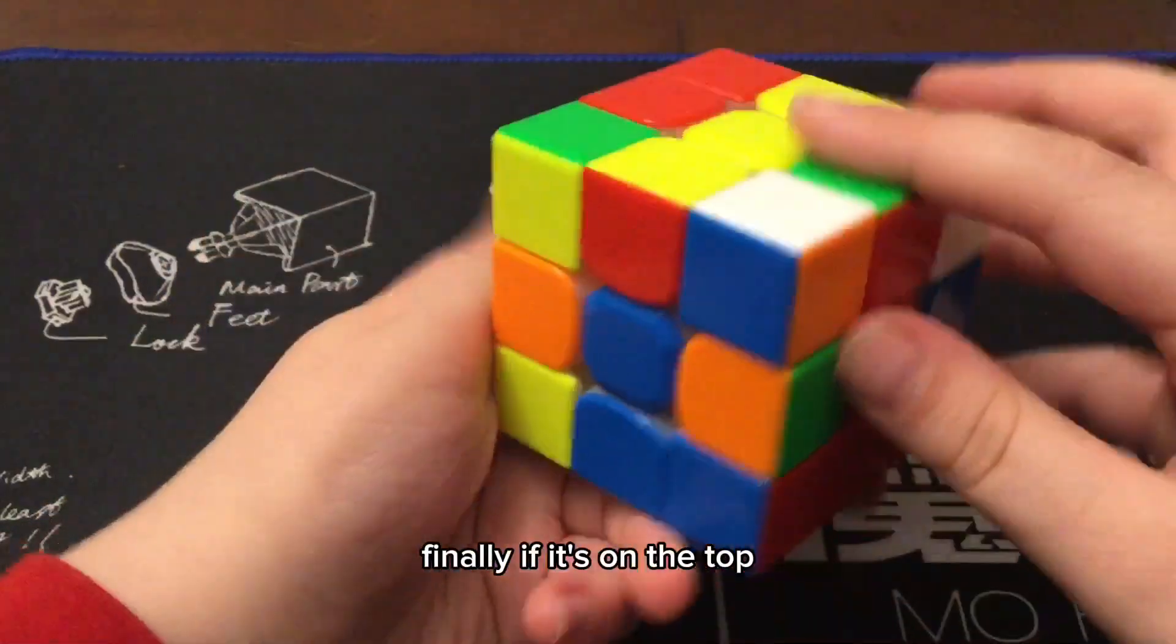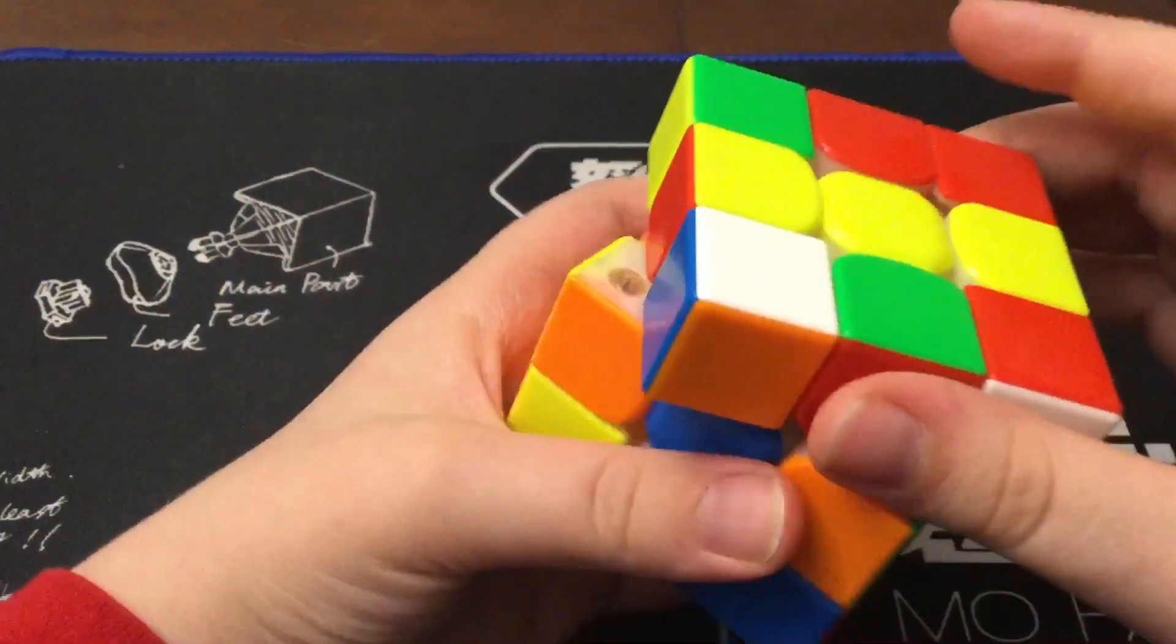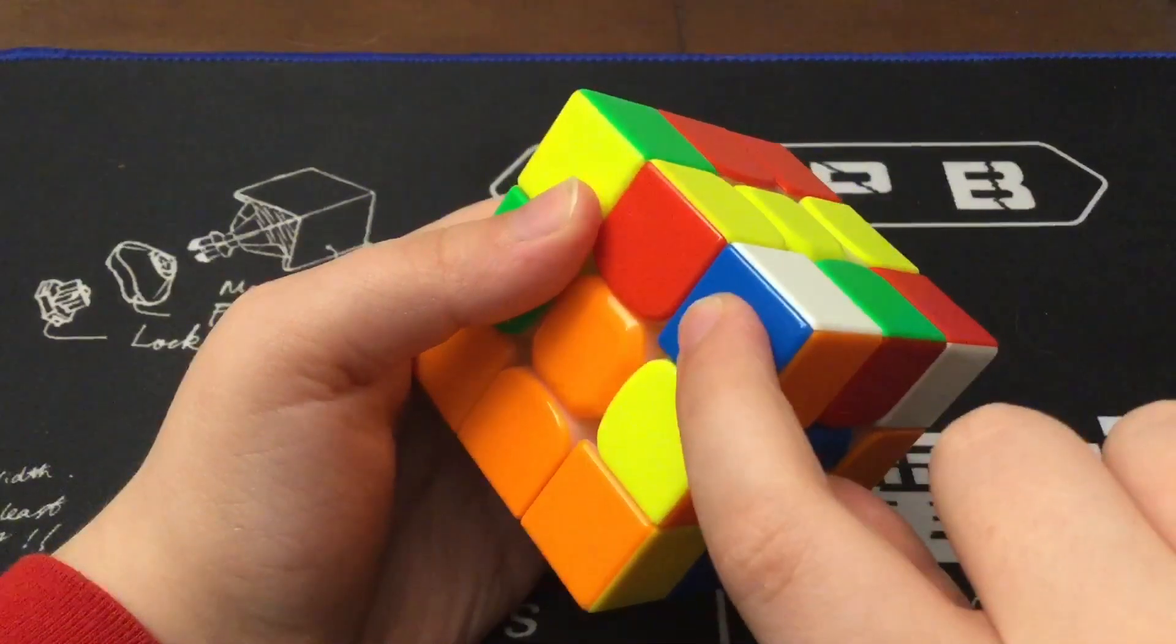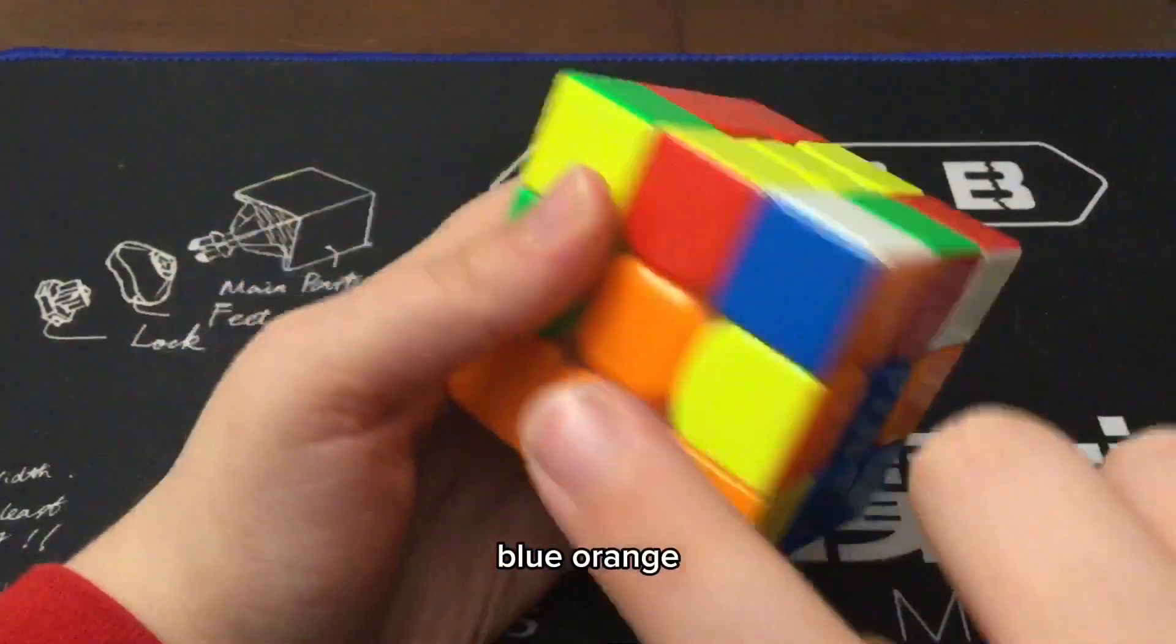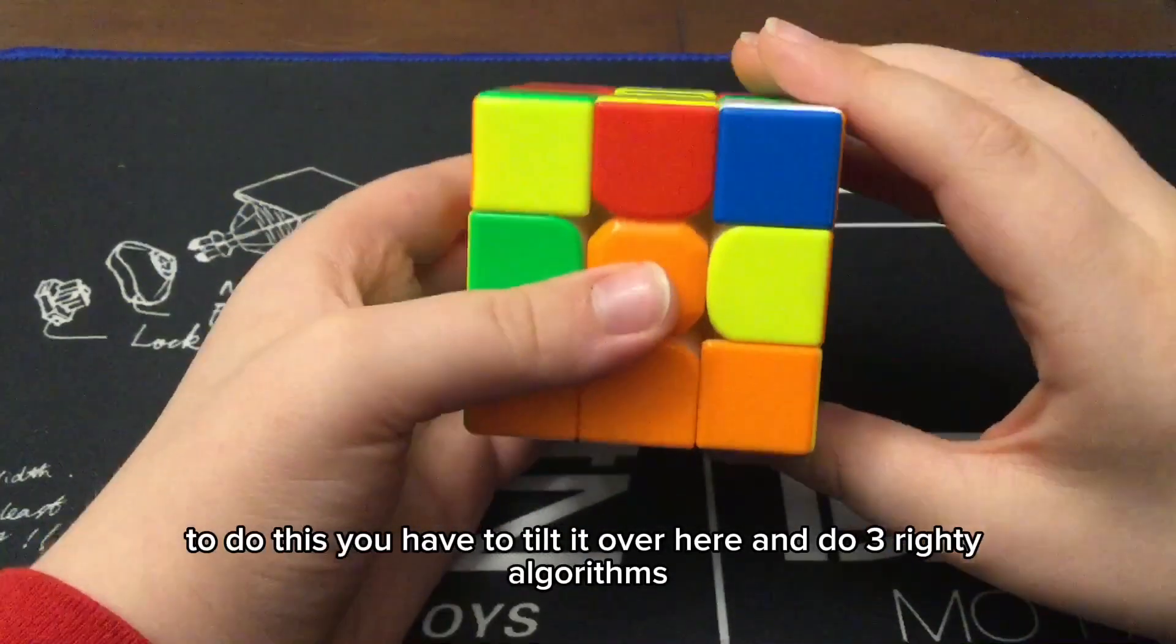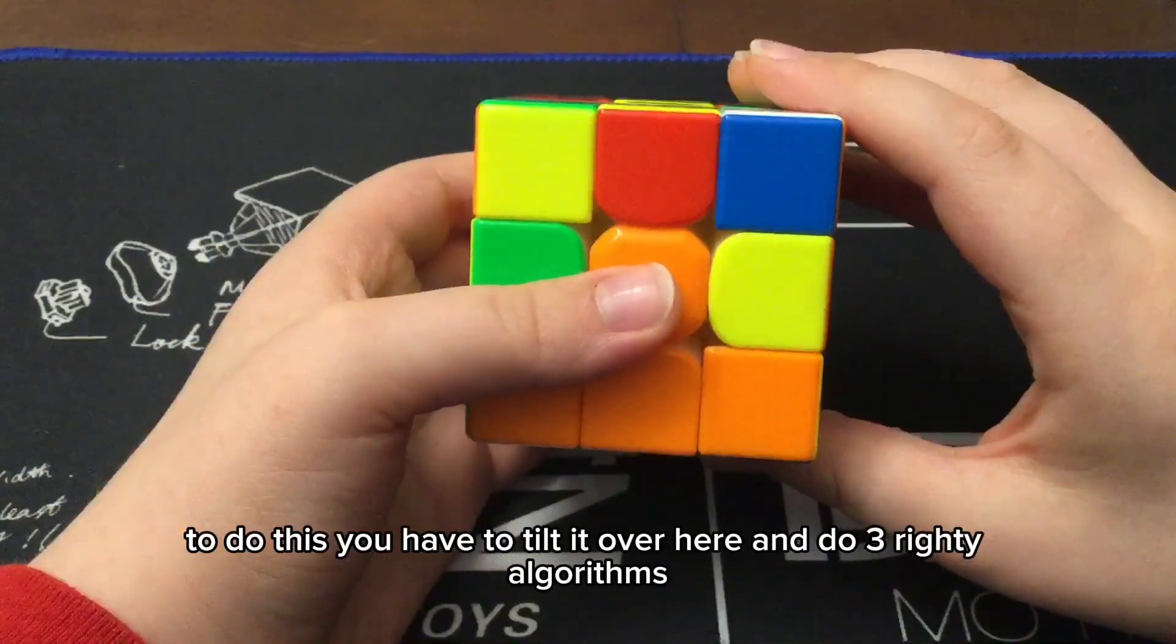Finally, if it's on the top, bring it over to where it's supposed to be. I think you understand it by now. Blue, orange, blue, orange. To do this, you have to tilt it over here and do three righty algorithms.